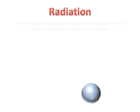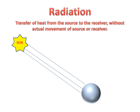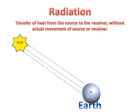What is radiation? In radiation, transfer of heat takes place from the source to the receiver without actual movement of the source or receiver. A simple example: we have the Earth and the Sun. The Sun gives radiation to the Earth and heating of the Earth takes place. No source or reservoir moves towards the other. The movement of the source and receiver does not take place, and no medium is needed to transfer heat.